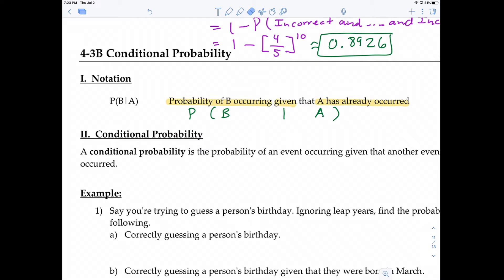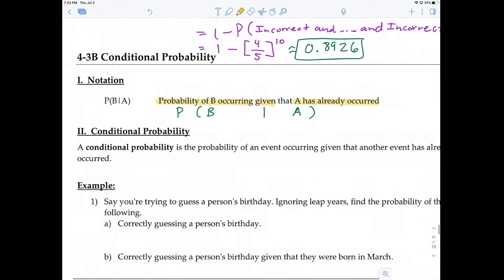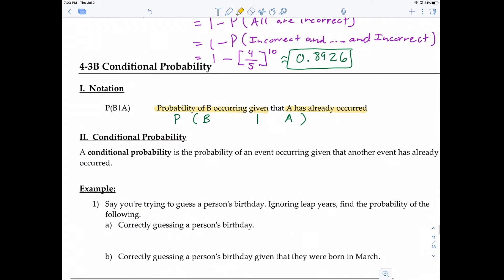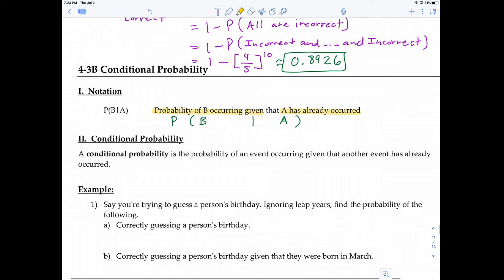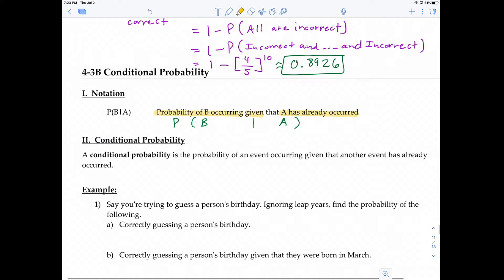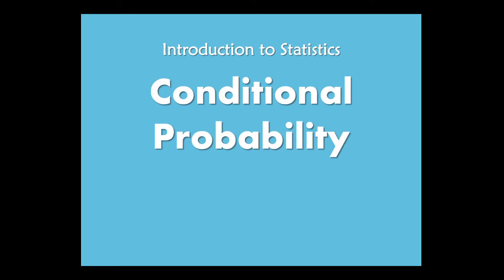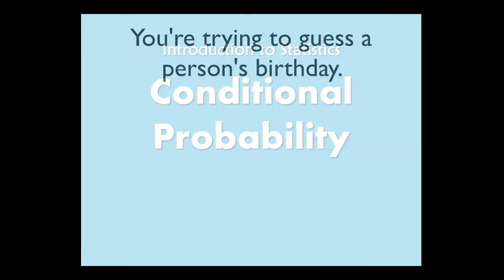A conditional probability is the probability of an event occurring given that another event has already occurred. Let's take a look at a presentation I have prepared — conditional probability.